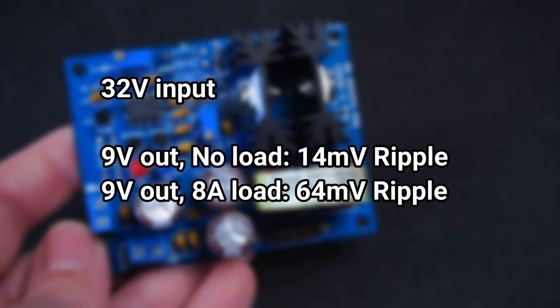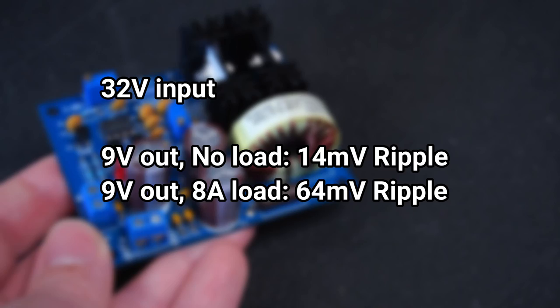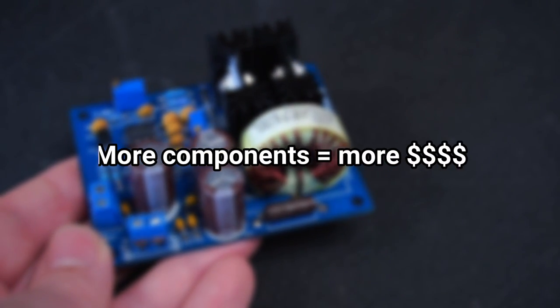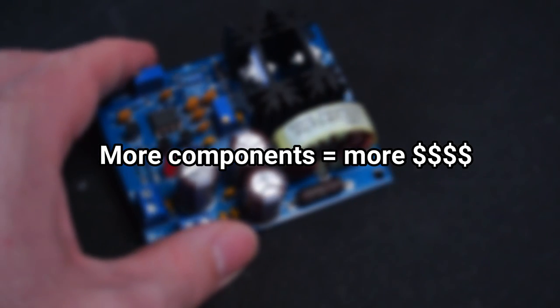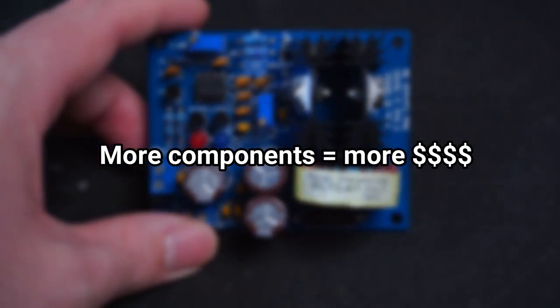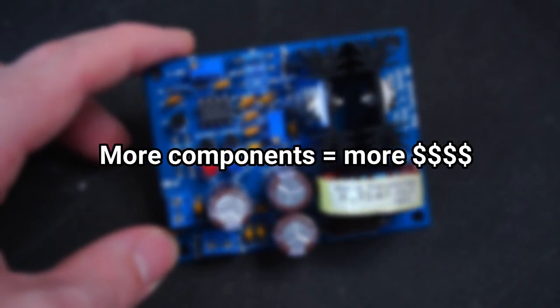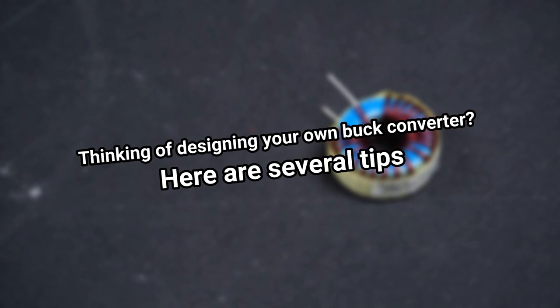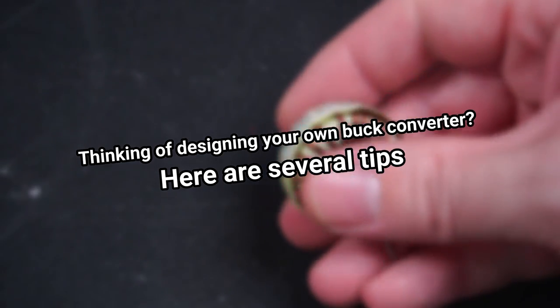These figures are about as good as you should expect from a buck converter like this. Reducing the noise further would be possible with the addition of a larger output capacitor or even perhaps a voltage regulator. However it's all relative to the application and for most people including myself 64mV of ripple at 8A is more than good enough. If you're thinking of designing your own buck converter from scratch like I did here are several design tips.